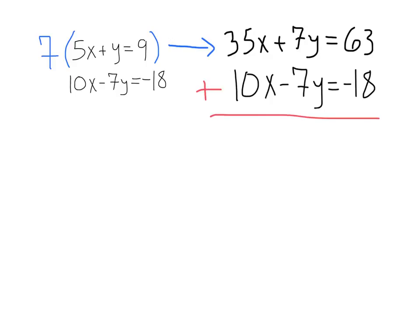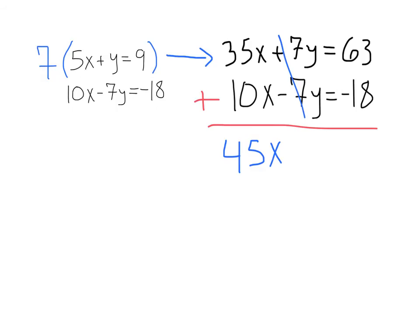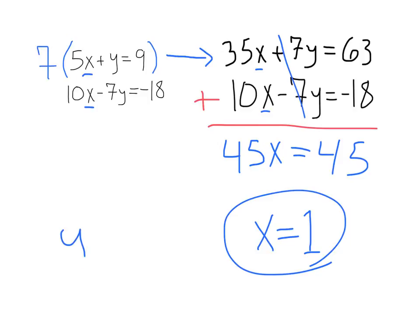Adding these together, we're going to get 35x plus 10x, which would be 45x. We'll get 7y minus 7y, and success! That y value eliminates. Now, we're going to get equals 63 minus 18, 45. Solving from there, we're going to get an x value of 1. Lastly, to solve the equation, take that 1 and plug it into whichever equation makes your heart happiest. Doing that, you're going to get a y value of 4.